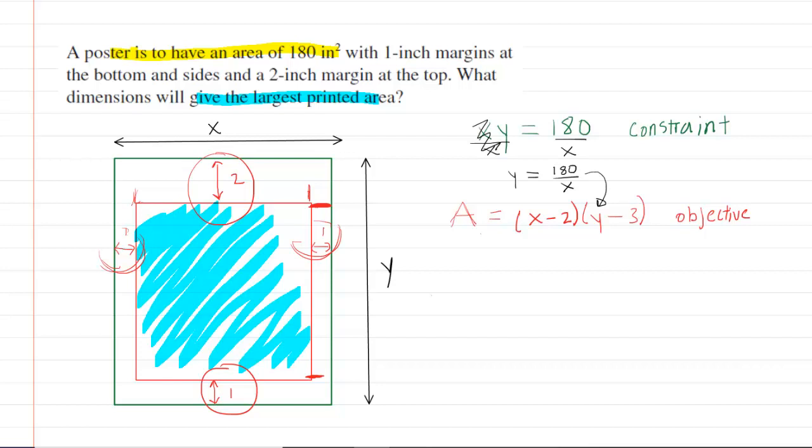And then we're going to end up with an equation in terms of one variable which will be X. So the area of the printed area will be X minus 2 times, and instead of Y, we're going to substitute in 180 over X minus 3.